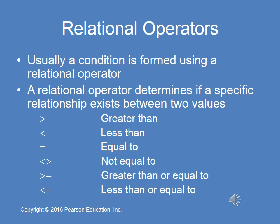Usually the Boolean condition is formatted using a relational operator. These determine if values are greater than, less than, equal to, not equal to, greater than or equal to, or less than or equal to. In the coat example, if the temperature was less than or equal to 40 degrees Fahrenheit, I would wear a coat. That's the Boolean condition — either true or false. If it's 39 degrees, it's true. If it's 52 degrees, it's false.